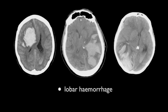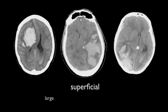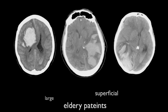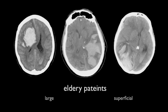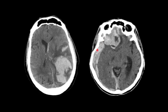Lobar hemorrhages tend to be large, located superficially within the cerebral hemispheres, and are more commonly seen in elderly patients. Their superficial location makes them prone to extend into the subdural space, and although given their size they can also extend into the intraventricular system, this is not as common as with hypertensive hemorrhages.